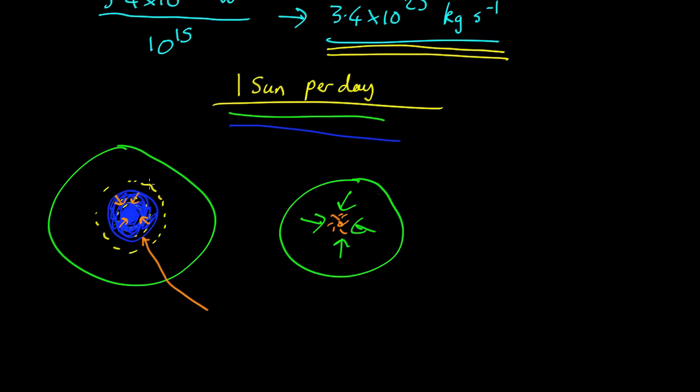If you do the calculations, it turns out that electron degeneracy pressure or neutron degeneracy pressure can hold it up as long as it's less than maybe one or two solar masses. But by the time the iron core is more than two solar masses, there is no force that humans know about that can stop it collapsing.